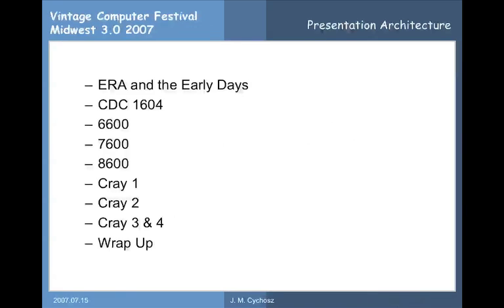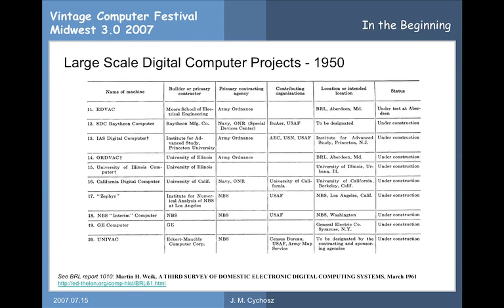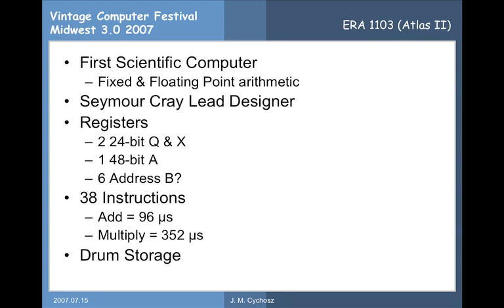This talk will give you a quick overview of the machines designed by Seymour Cray, starting with the early days: the ERA and the Control Data 1604, 6600, 7600, and on through the Cray 3 and 4. This is just a quick list of some large computer efforts going on in the early 1950s. We'll begin with the ERA 1103, which I consider to be the first scientific computer.